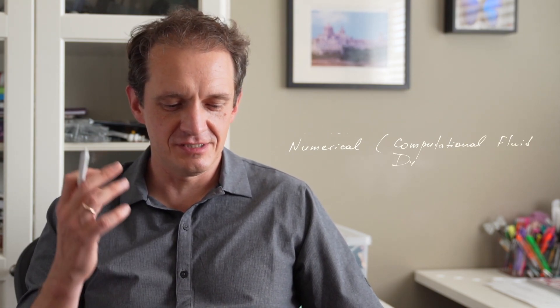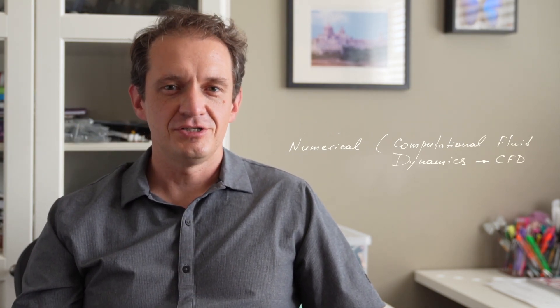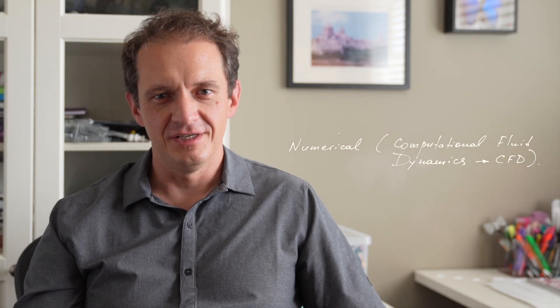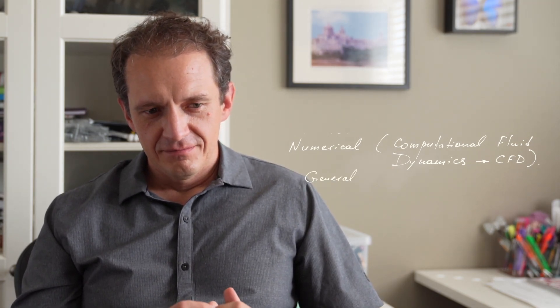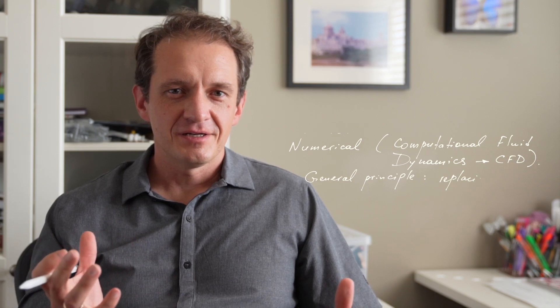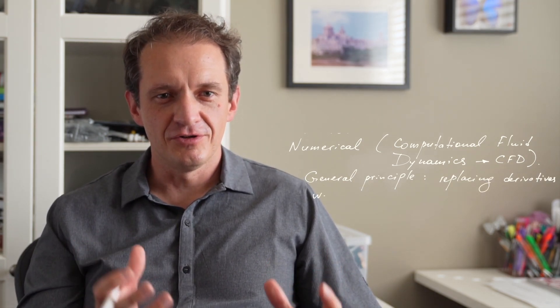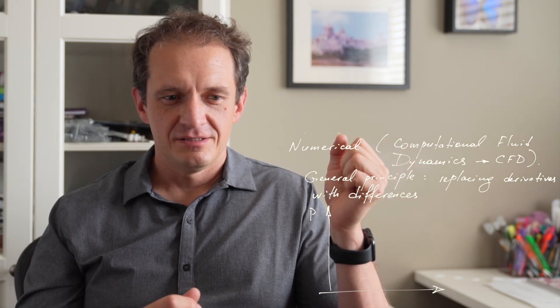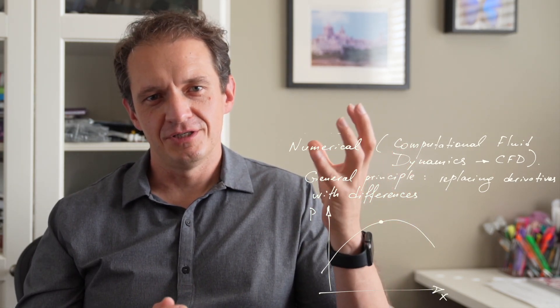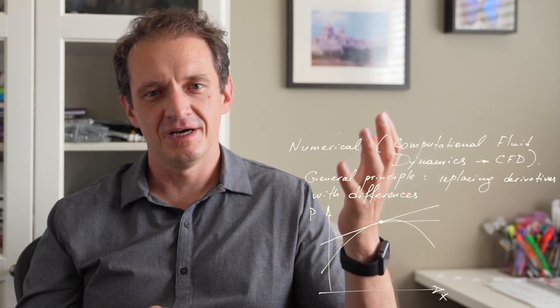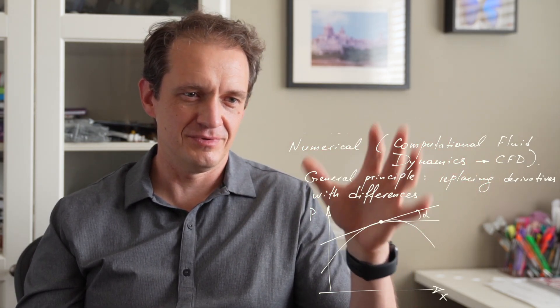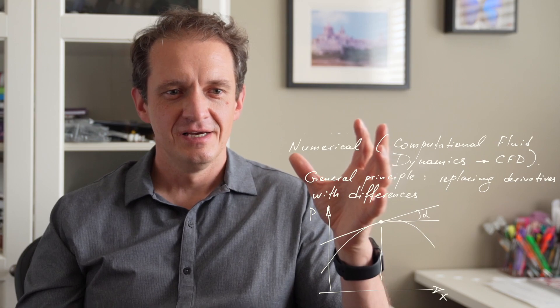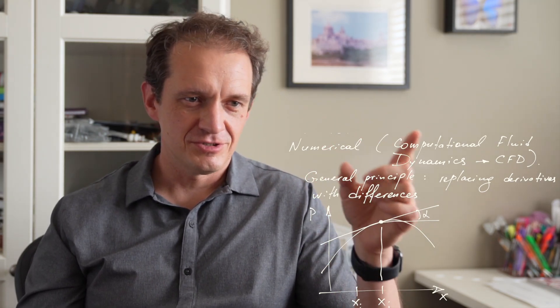What we can do, however, with that system of equations is very often find an estimate of the solution using a numerical manipulation, a numerical approach. This is where computational fluid dynamics, or CFD, comes into play. The principle of numerical solution, in a nutshell, of solving this system of partial differential equations is replacing the derivatives in those equations with differences. For example, if we have pressure as a one-dimensional function of x and we want to find the derivative of the function at a given point, that would be the slope of the tangent line to that function at the point.